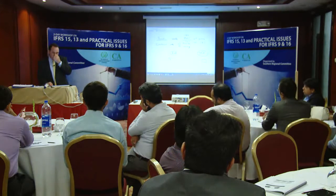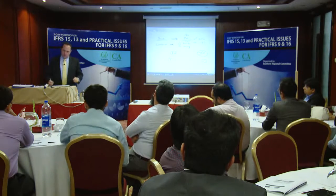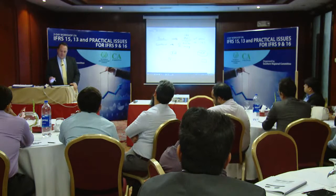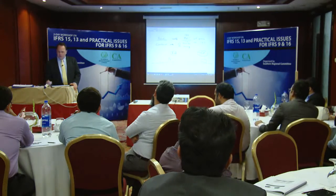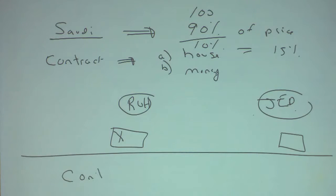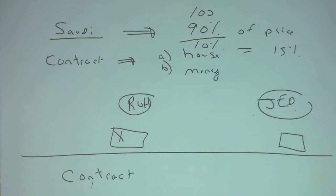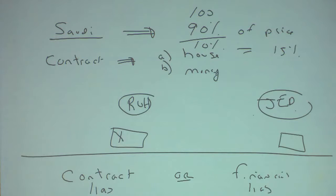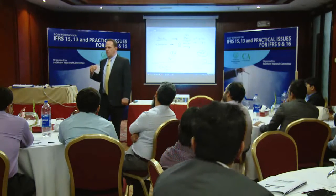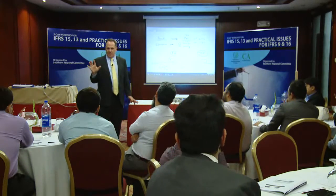The question is: how would you recognize the revenue? The key issue is whether the money you get from the government of Saudi Arabia is a contract liability or a financial liability. If it's a financial liability, it means you have to give the money back. If it's a contract liability, it means you don't have to give the money back.